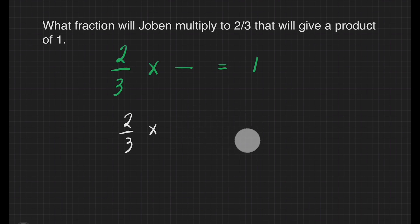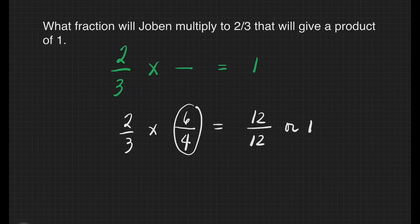Any suggestions? What if we will multiply it to 6/4? 2 times 6 is equal to 12, and 3 times 4 is equal to 12. 12 divided by 12 is equal to 1. Is it possible that our answer is 6/4? Our answer could be 6/4. What if we will reduce 6/4 to its lowest terms? That is 3/2.